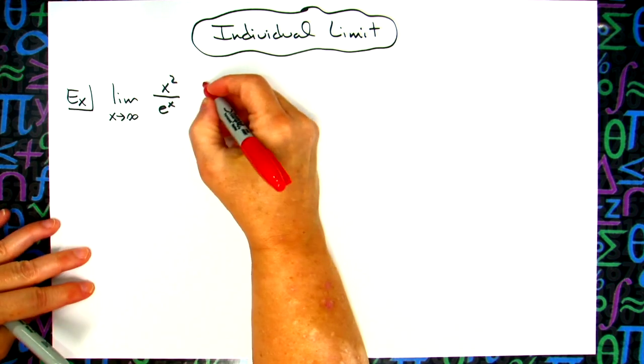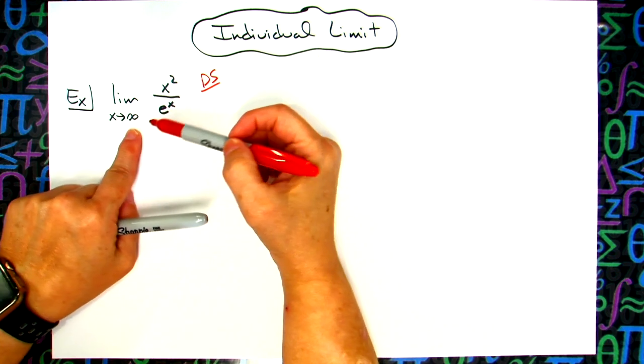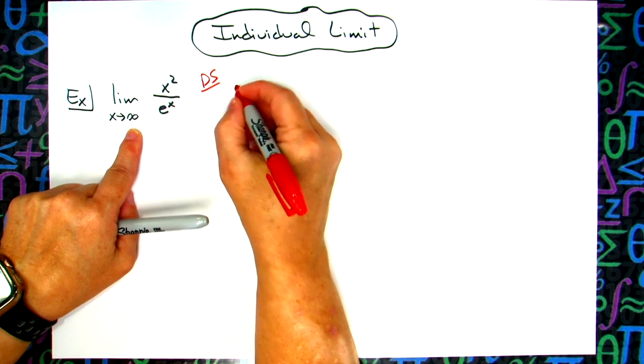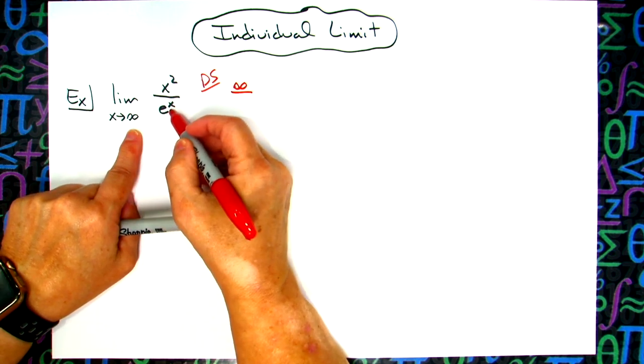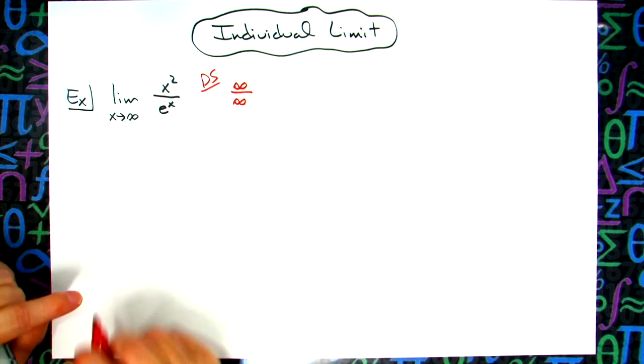First, you want to try direct substitution because you always try that first. As x approaches infinity, plugging that into the top, x² gives infinity. Taking infinity and plugging it into e^x also gives infinity. So I definitely have an indeterminate form.